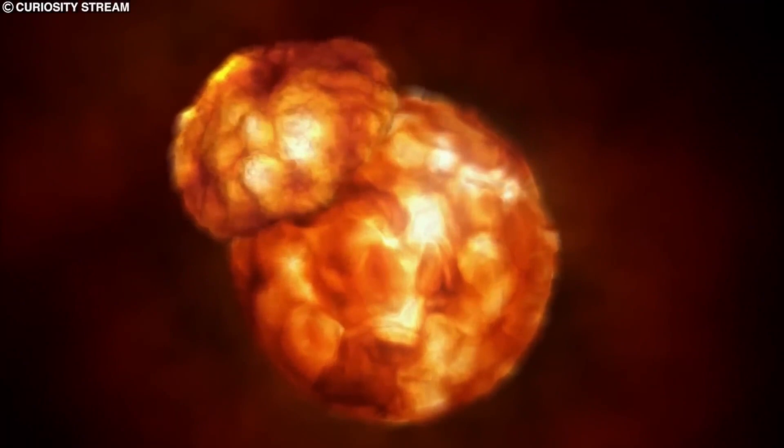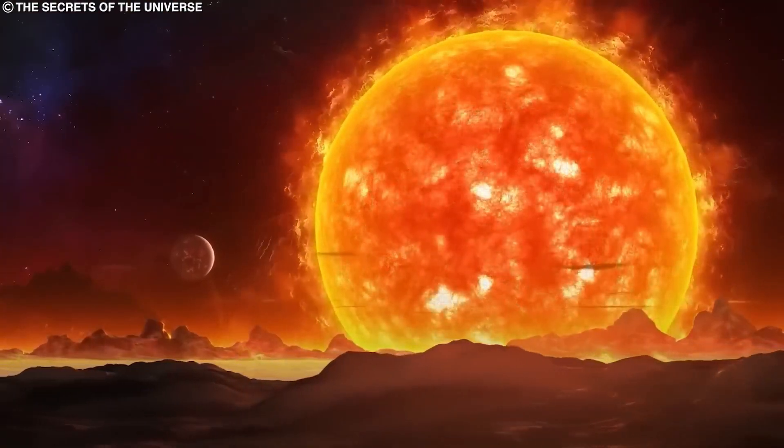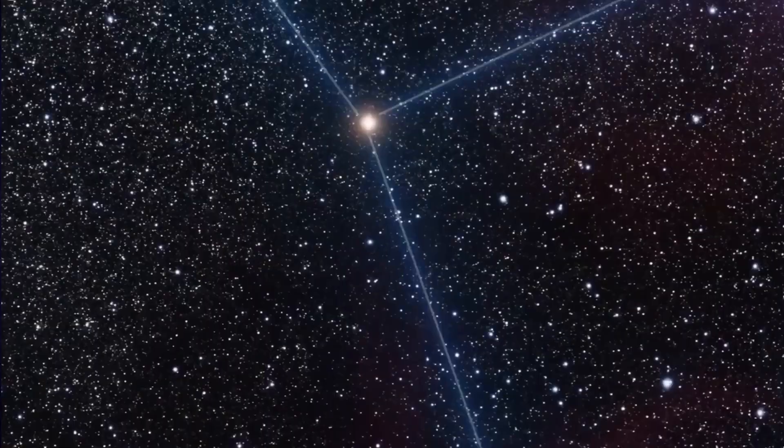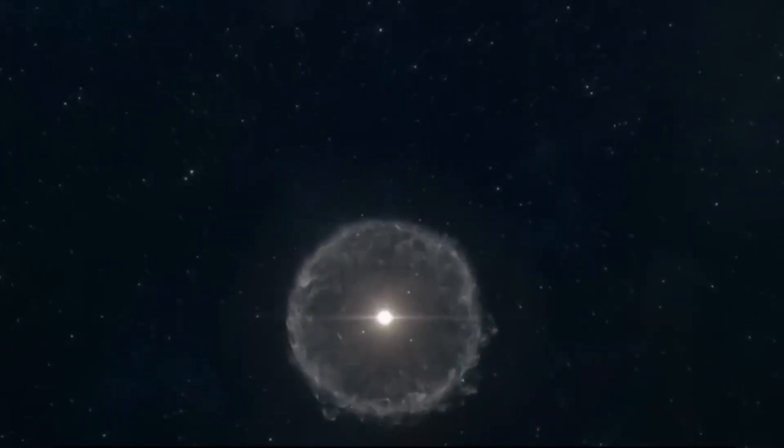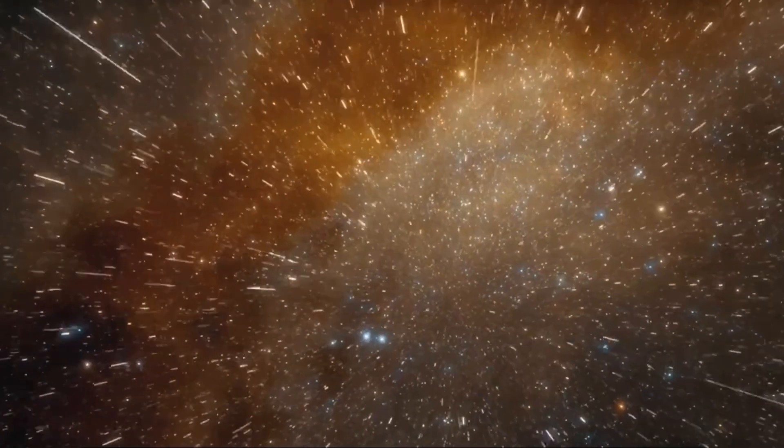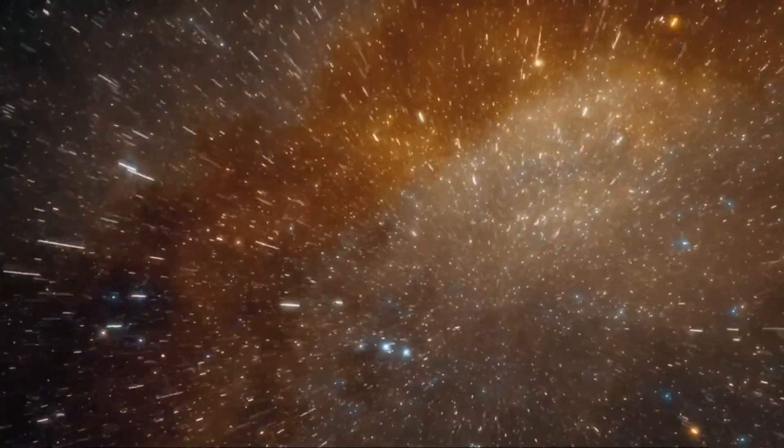Now, picture this: if Betelgeuse does go supernova, what would it look like? Well, this star is about 500 light years away, so it's not in our cosmic backyard. After the explosion, the first thing we'd experience is a rain of tiny particles called neutrinos. Don't worry though, they're harmless to us earthlings.